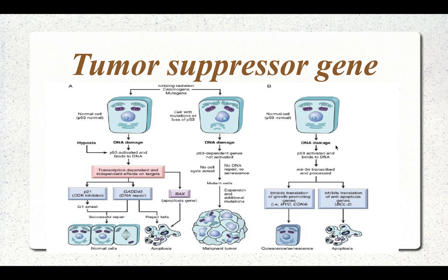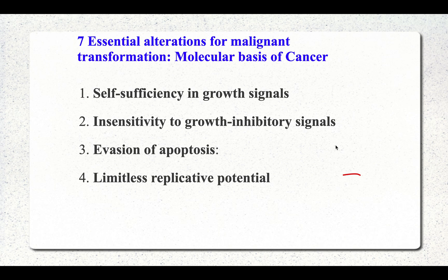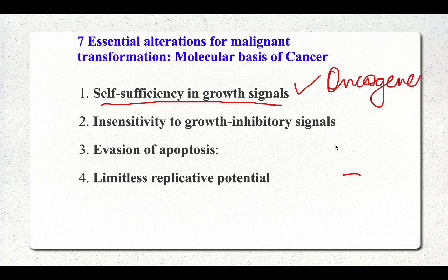This video will discuss tumor suppressor genes. In the previous video, we discussed the molecular basis of cancer, covering only self-sufficiency in growth signals — the oncogenes part. Now we move to the second step: insensitivity to growth inhibitory signals, which is the tumor suppressor genes part.